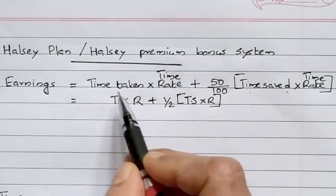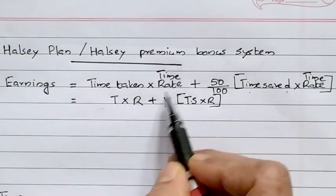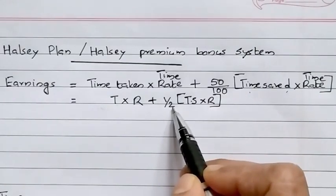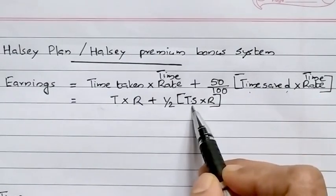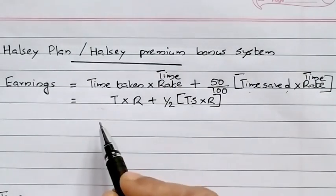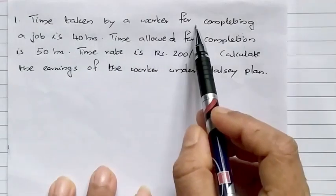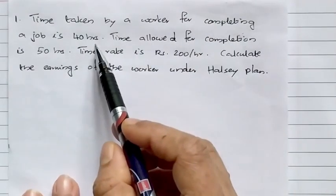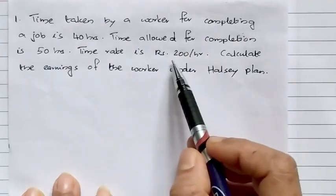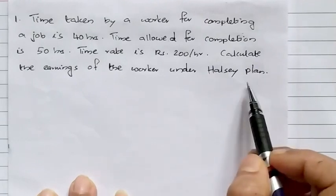In short form, Earnings = T × R + (1/2) × Ts × R, where T is time taken, R is time rate, and Ts is time saved. Now let's apply this to a problem: Time taken by a worker to complete a job is 40 hours; time allowed for completion is 50 hours; time rate is Rs. 200 per hour. Calculate earnings of the worker under the Halsey Plan.